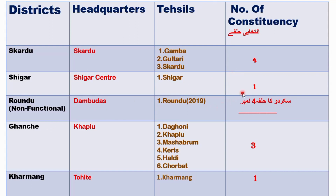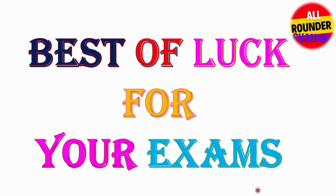Number of constituencies in Baltistan Division: in Skardu there are four, in Shigar there is one, in Randu — which as of 2023 is counted as the fourth constituency of Skardu — in Ghanche there are three, and in Karmang there is only one constituency. That concludes today's video. Best of luck for your exams. Please share the video and subscribe to our channel for more updates. Thank you, Allah Hafiz.